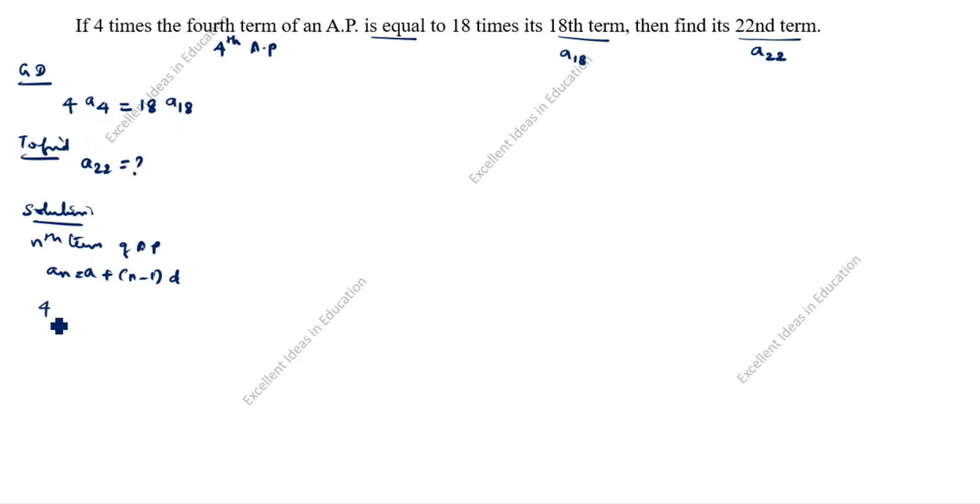What is given in this question? 4 times a4 is equal to 18 times a18. So, 4 times a4, we will split as per this formula. A plus, what is n? n value is given as 4, so 4 minus 1 into d equal to 18.